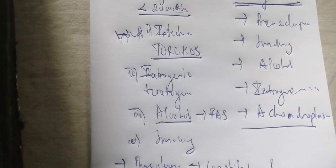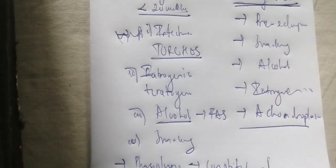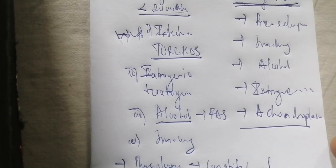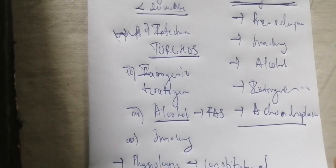We are now finished with the etiologies of intrauterine growth restriction. Those are the different elements you have to evaluate in your patient. The next thing to evaluate is how to make a diagnosis of birth asphyxia, prematurity, and intrauterine growth restriction.